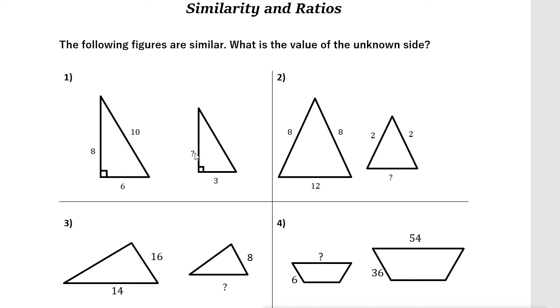To solve for this unknown side, we need to write a proportion. This side 6 is proportional to this side 3, and we're looking for this side, the unknown side. For this shape, for the bigger triangle, it is 8, and for the smaller triangle we don't have that one.